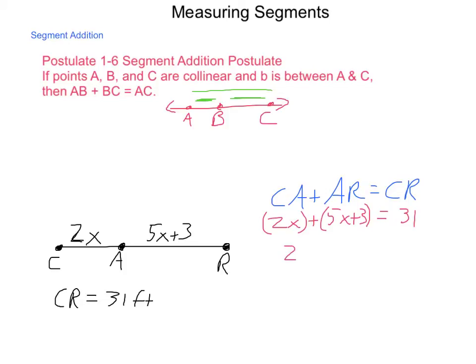Subtract 3 from each side. 7x equals 28. Dividing by 7 gives us x is equal to 4. So if x equals 4, then 2x is 8. 5x plus 3 is 5 times 4, which is 20, plus 3, so 23. And we have the lengths of the individual points, or individual segments. So, add pieces together to get the length of the overall unit.